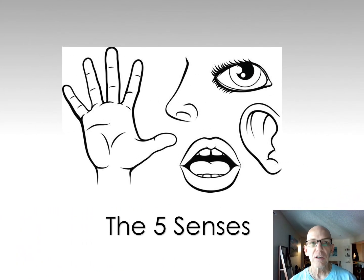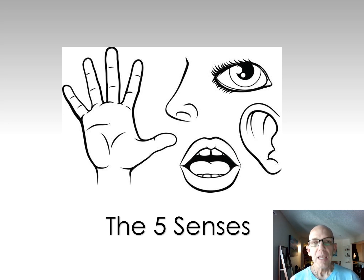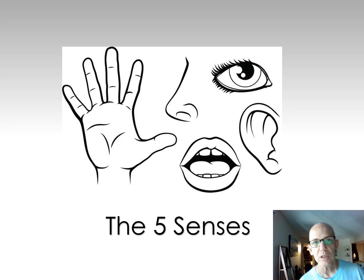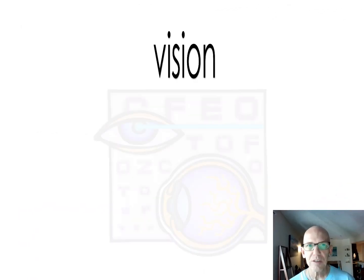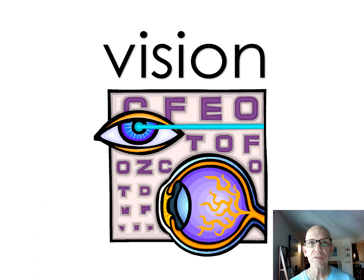There are actually more than five senses, including the vestibular sense. But I'm going to talk about four major ones. Touch is one, but I won't talk a lot about it — remember it goes to the parietal lobe. The first one I want to discuss is vision.